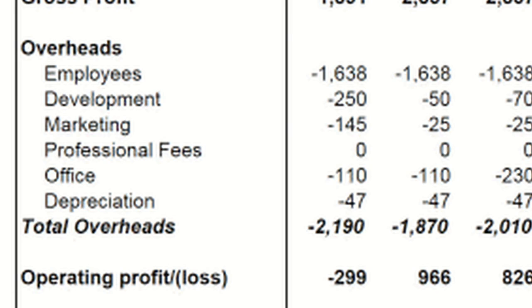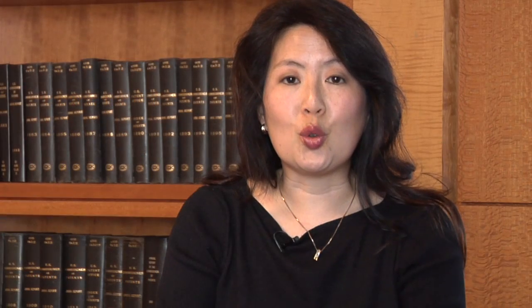First, you would start with your revenue or sales. And then the next big category would be the cost of goods sold, which would include the cost of producing and manufacturing, transporting and storing the inventory that you have for sale.